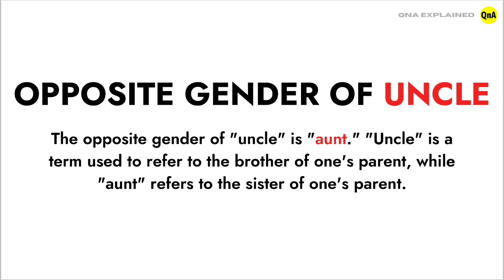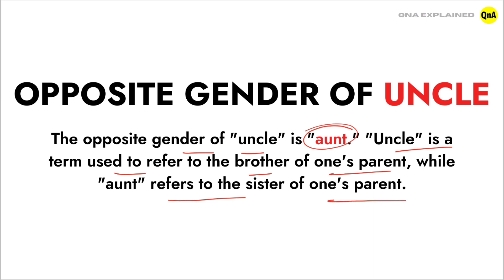Let's see once again. The opposite gender of uncle is aunt. Uncle is a term used to refer to the brother of one's parent, while aunt refers to the sister of one's parent.